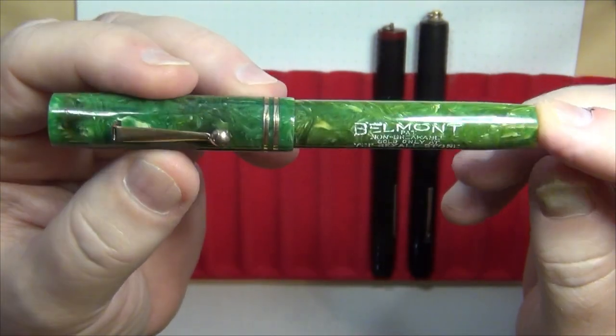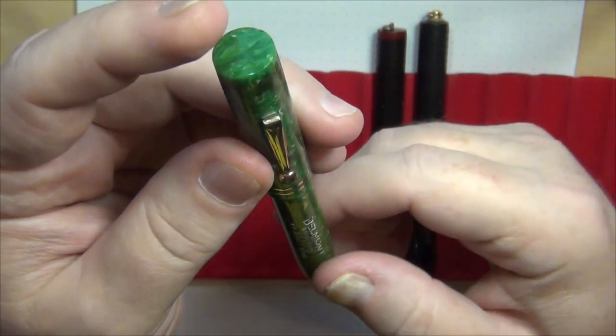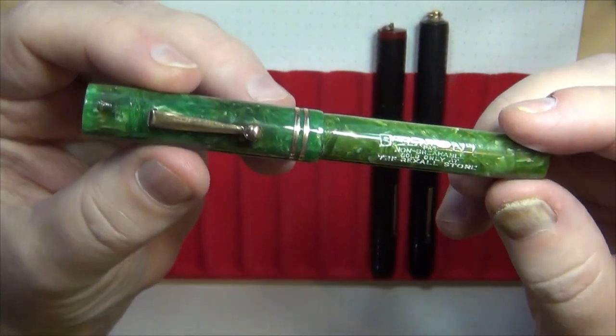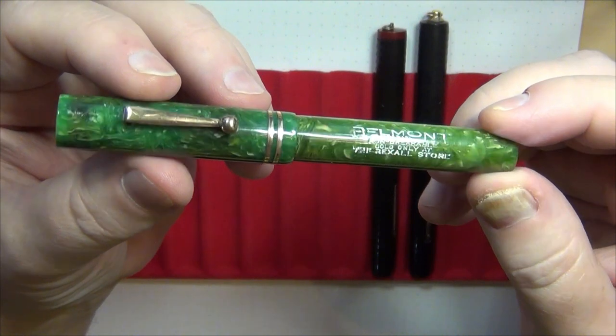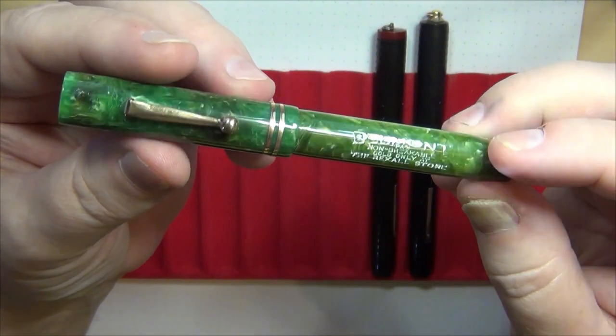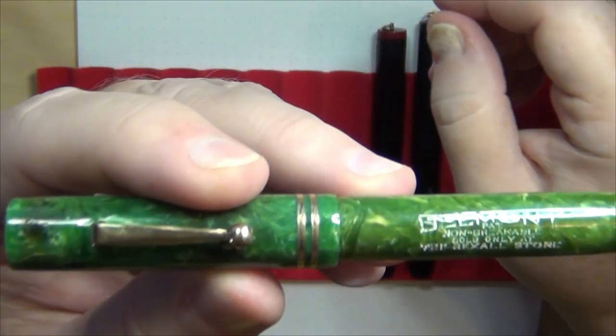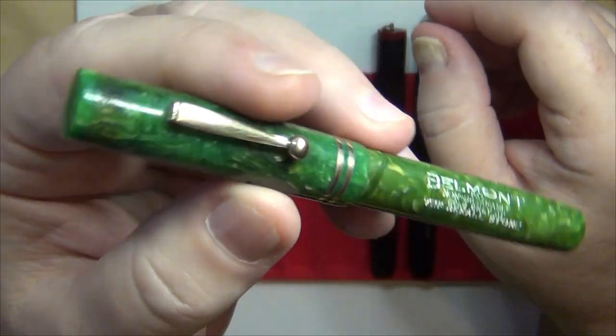Somebody from the Boston pen company used to work for Schafer and that would explain possibly why you have this, it looks like a Schafer flat top especially with a jade celluloid which to me are some of my absolute favorites. And I am not a big fan of green but jade celluloids from the 1920s 1930s are to me some of my absolute favorite celluloids that are out there.